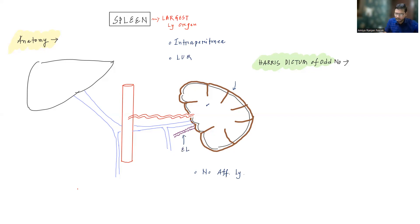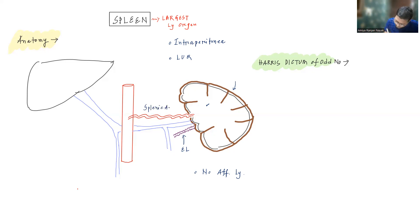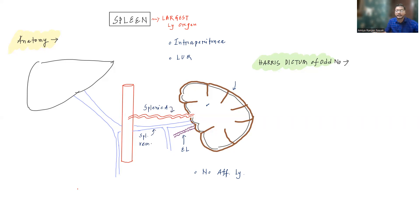At the hilum, you can find efferent lymphatics. You will also find the splenic artery and the splenic vein at the hilum. So that is the first difference from the lymph node — spleen does not have afferent lymphatics.